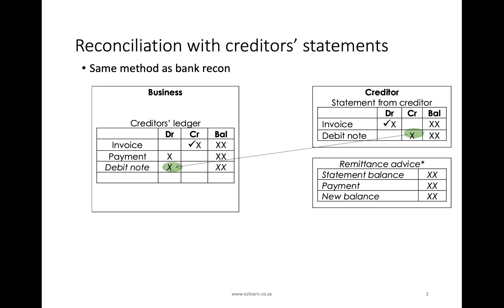Firstly, what you'll do is check that transactions are the same. You can see there's an invoice that has been recorded correctly on both sides. However, there's a transaction that perhaps hasn't yet appeared in the creditor's ledger, so you would need to update your records with information you don't yet know about. At the same time, you might have had a payment that your creditor hasn't yet seen, so you would show that on your remittance advice or creditor's reconciliation statement.